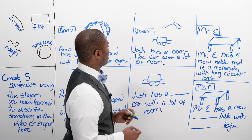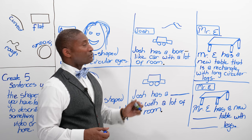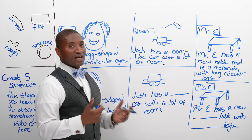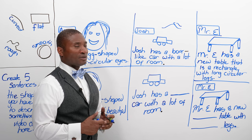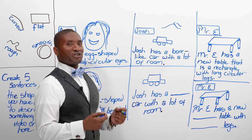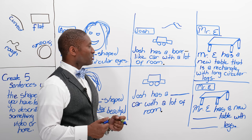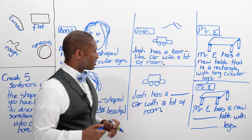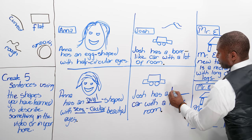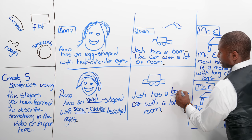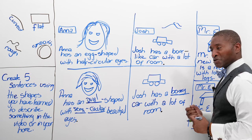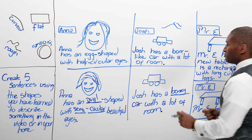They had a lot of room. Josh has a car that's box-like and has a lot of room. Why don't we change it and say it's more like a muscle car, like a jeep? So instead of saying it's box-like, what if we say he has a boxy car? Now it sounds muscular and strong.